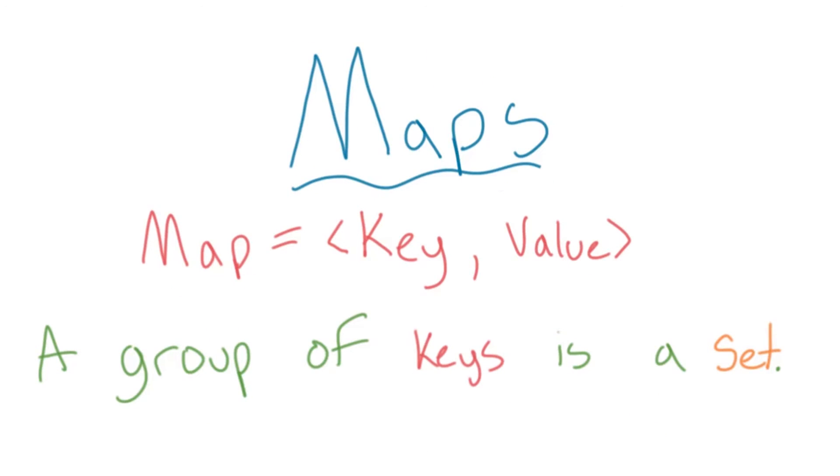A map is a set-based data structure, kind of like an array is a list-based data structure. The keys in a map are a set. I know that's a lot of new terminology, but let's look at exactly what that means.